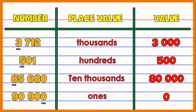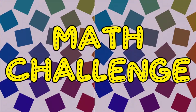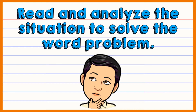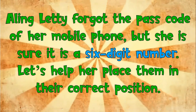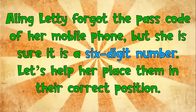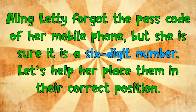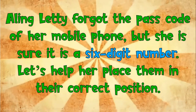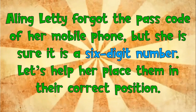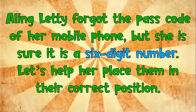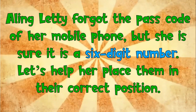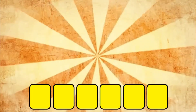I hope you've learned something for today. Now, let's proceed with our math challenge. Let us read and analyze the situation to solve the word problem. Aling Letty forgot the passcode of her mobile phone, but she is sure it is a 6-digit number. Let's help her place them in their correct position. Can you help Aling Letty? Alright, let's go! Again, Aling Letty's mobile passcode has a 6-digit number.